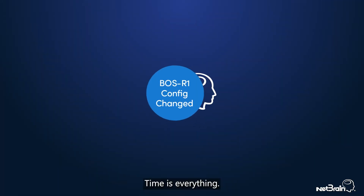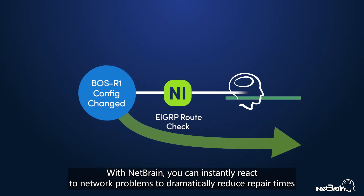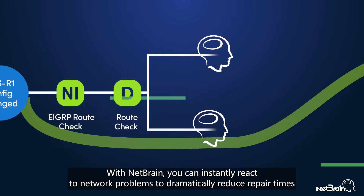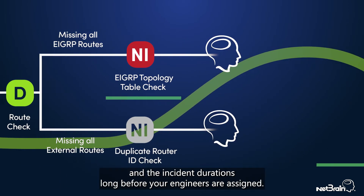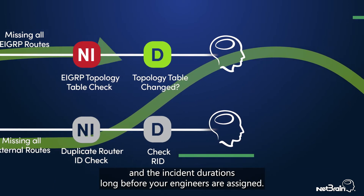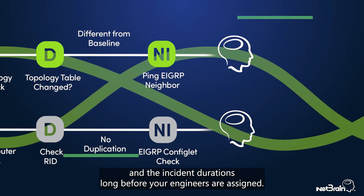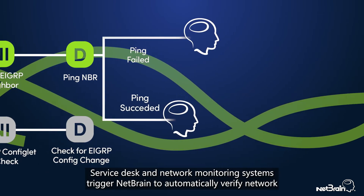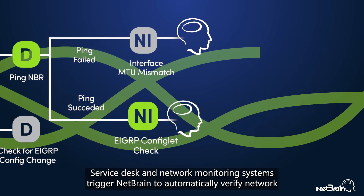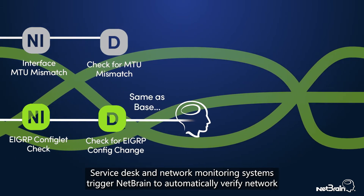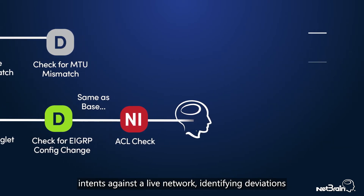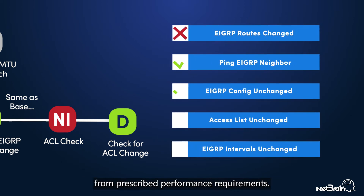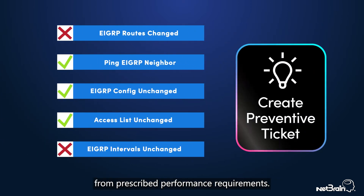Time is everything. With NetBrain, you can instantly react to network problems to dramatically reduce repair times and incident durations, long before your engineers are assigned. Service desk and network monitoring systems trigger NetBrain to automatically verify network intents against the live network, identifying deviations from prescribed performance requirements.